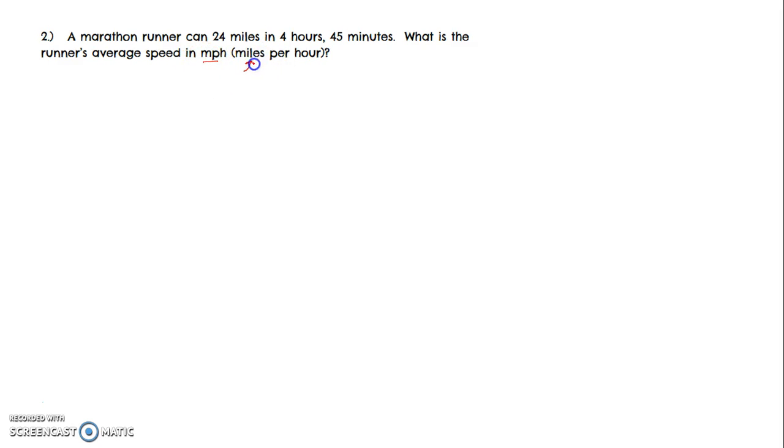That means how many miles can that runner go in just one hour? Miles per hour, if you see a sign on the highway that says 65 miles per hour, it means you'll go 65 miles every hour you travel. That's what speed means. It tells you how far you get to go in just one hour.